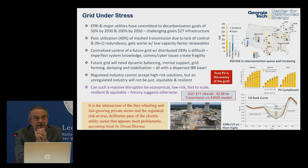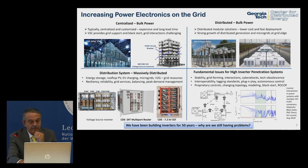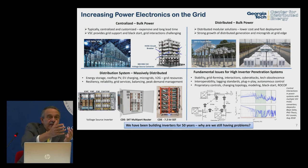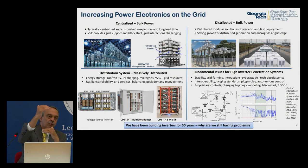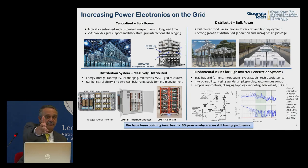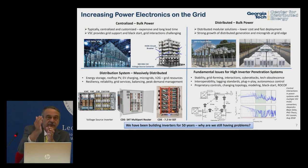This new grid needs much more dynamic control through power electronics — centralized and massively distributed at the grid edge. We've been building inverters for 50 years, but every inverter until now was a device serving its customer. Now we're building devices that all interact with each other on the grid. The grid used to be a resource you connected to; now it can't absorb everything, so coordination is needed.